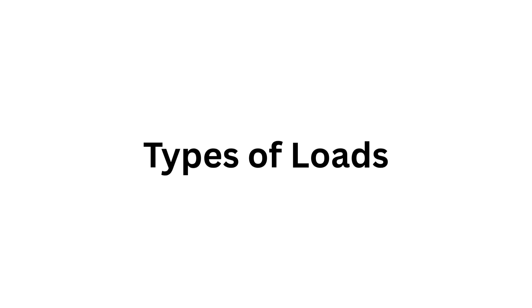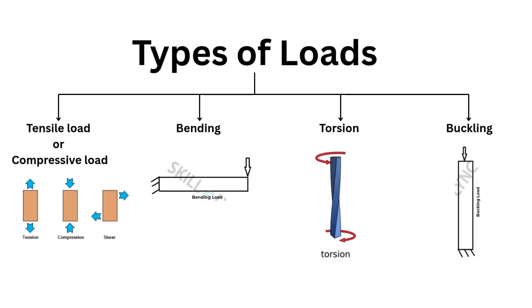First, let's understand that strength depends on what kind of load is acting on the part. There are four main types of loads. First is tensile, compression, or shear — tensile is pulling, compression is pushing, and shear is where two opposite-direction forces act on the part causing shearing. Then there is bending load, where the beam is supported at one or two ends with loading on the other side. And torsion, where a twisting action happens. And buckling, where a long column is under compression and fixed at the other end.